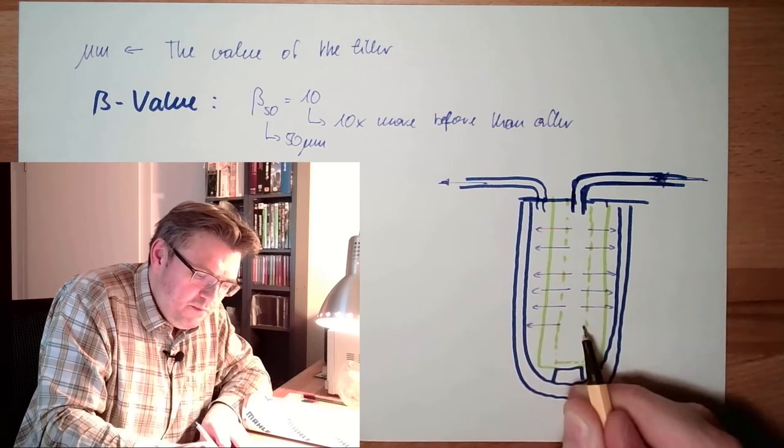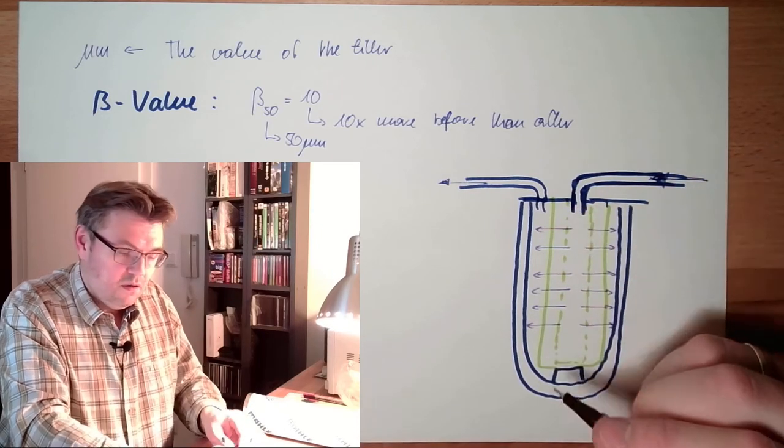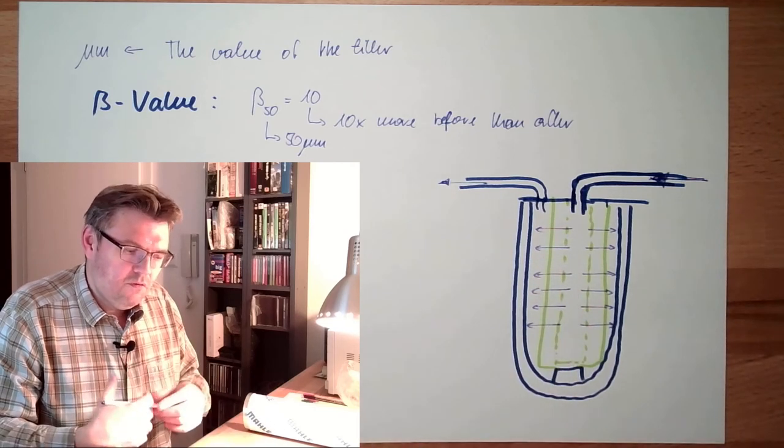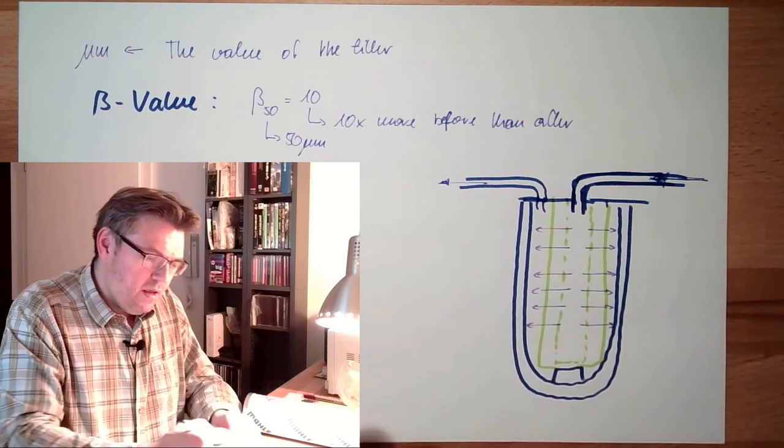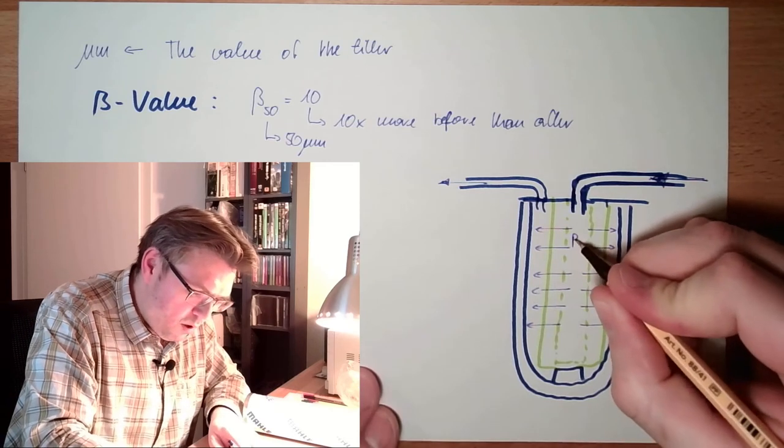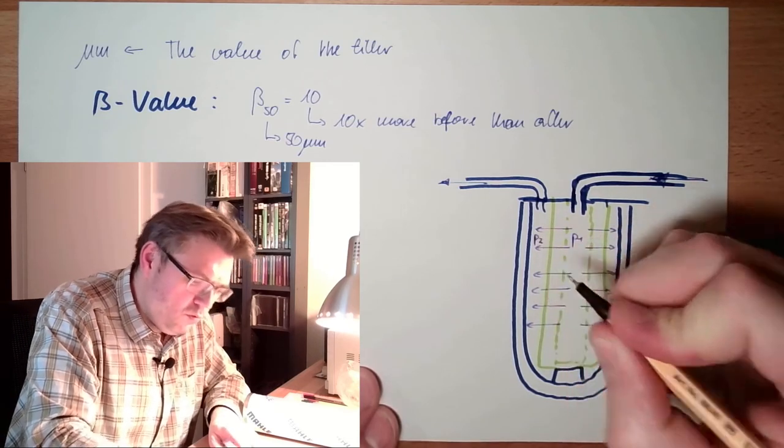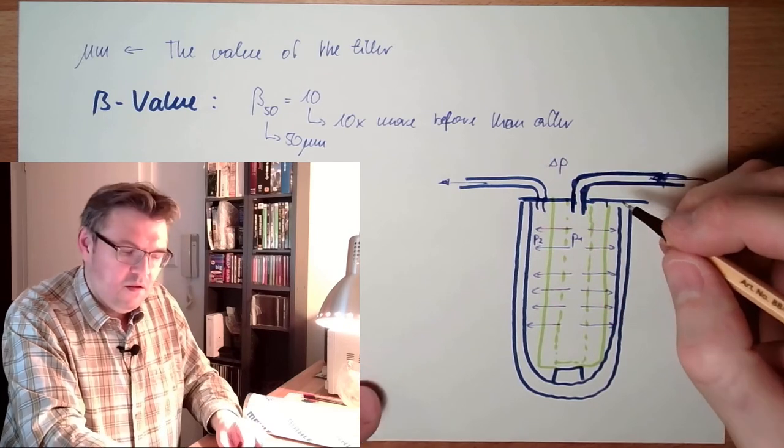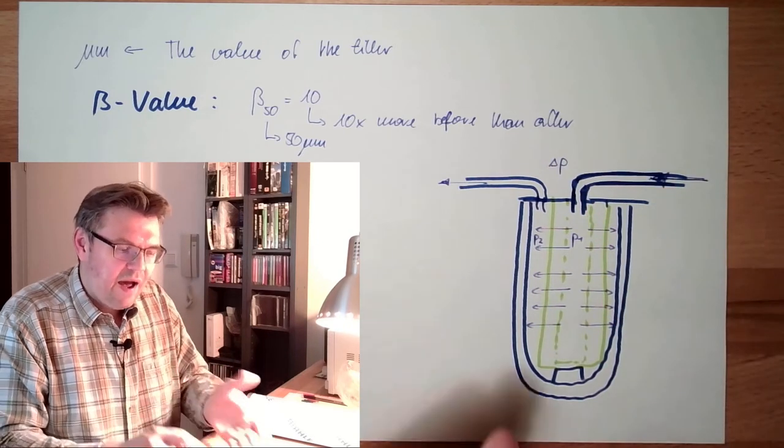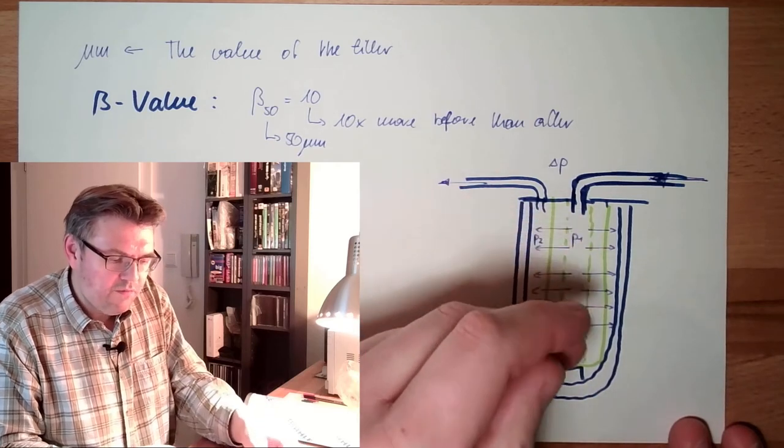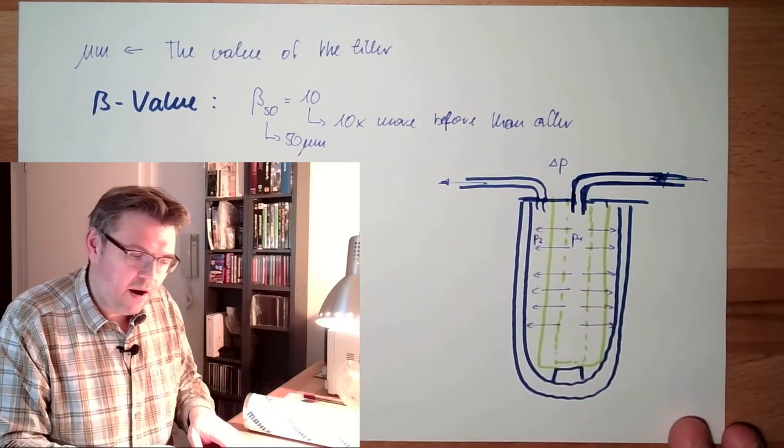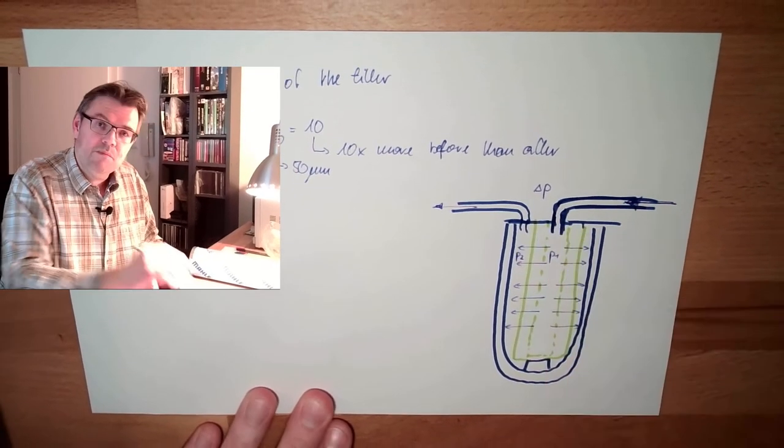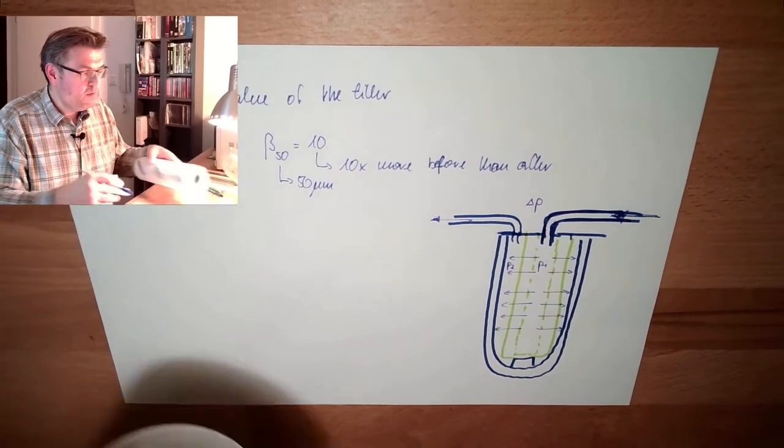Simply, if the filter gets clogged, there is more streaming resistance. Here I have a certain pressure P1, here a certain pressure P2, and in between I have a delta P. This delta P is higher the more the filter is clogged. The more the filter is clogged, the more delta P will rise. If there is no flow running through, delta P is zero.